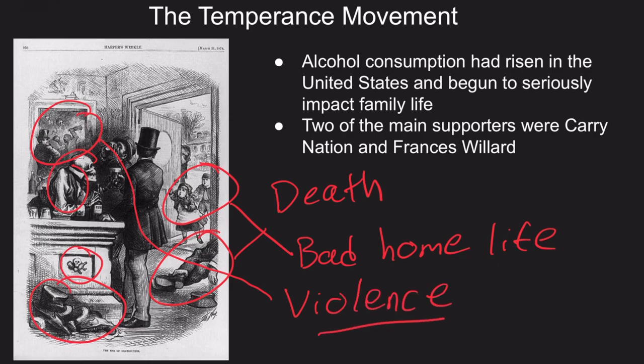A group, primarily women who were experiencing the brunt of this alcoholism, emerged to fight it. This reform — known as the temperance movement — was created to fight the causes of alcohol abuse. Some of the main supporters were Carry Nation and Frances Willard. Similar to the fight for women's suffrage, the temperance movement was derailed by the Civil War.